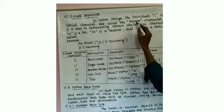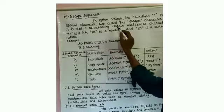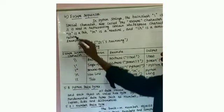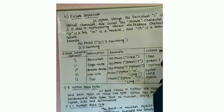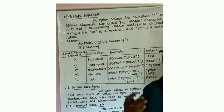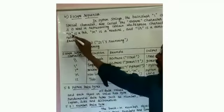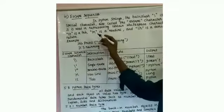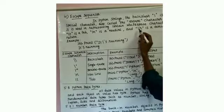A backslash is a special character, also called an escape character. It is used for representing certain whitespace characters. Whitespace characters include: \n for new line, \r for carriage return, and \t for tab. The tab key in the keyboard provides five character spaces, so using \t in a Python program will provide five character spaces. \n is a new line and \r is a carriage return.